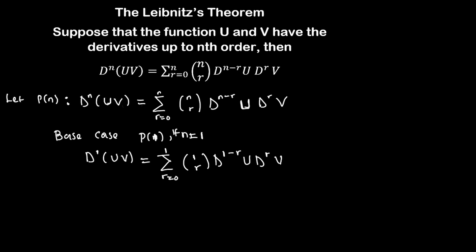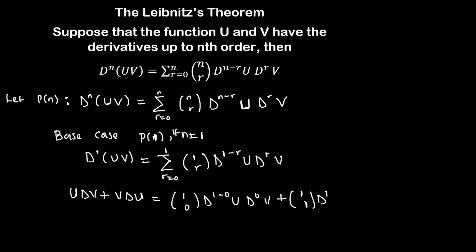Now if we differentiate this using the product rule — don't forget your product rule says that the derivative of the product of two functions gives you u times dv plus v times du — which is the same thing as, putting it in summation form: C(1,0) times d^(1−0)(u) times d^0(v), plus C(1,1) times d^(1−1)(u) times d^1(v).